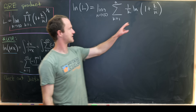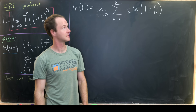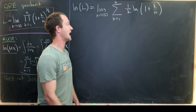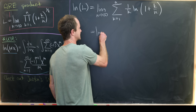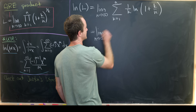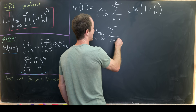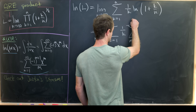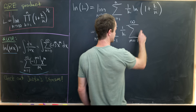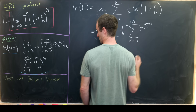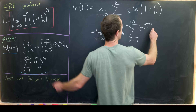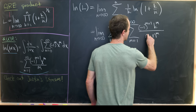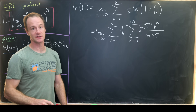Now we see we have the natural log of 1 plus something, so we can use our Taylor expansion with x equal to k/n. That gives us the limit as n goes to infinity of the sum as k goes from 1 to n of (1/k) times the sum as m goes from 1 to infinity of (−1)^(m+1) times x^m / m, where x^m = k^m / n^m, and we also have this m in the denominator.